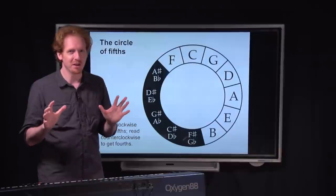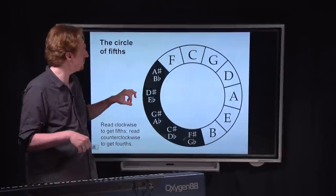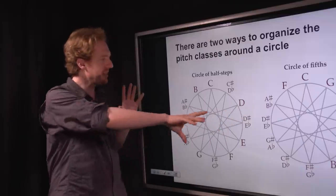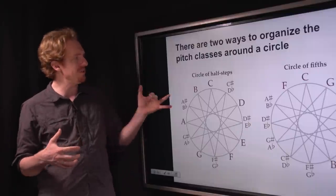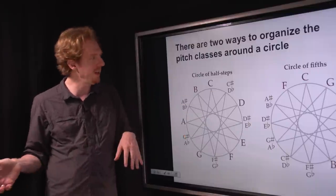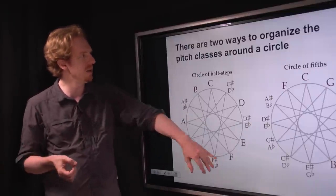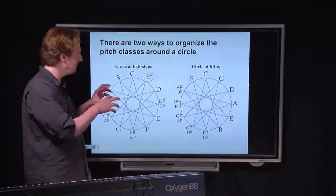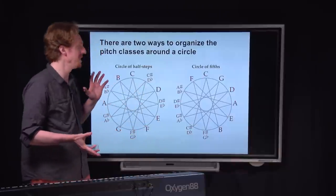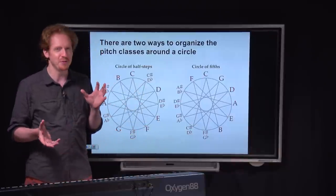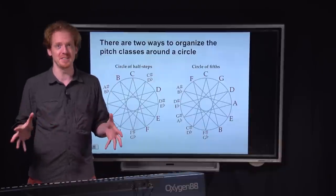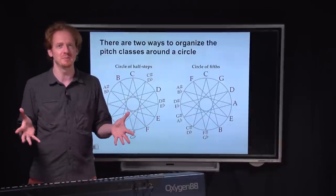We will talk much more about that in the next couple of videos. Here is a side-by-side comparison between the circle of half steps — half steps again just being the way the keys are laid out on the piano keyboard — and the circle of fifths. One of them is the involute of the other; they have this very interesting mathematical relationship, which if you're into math you should look into — it's super cool. In the next video we're going to talk about how to use all of this information to make actual music, so check it out.